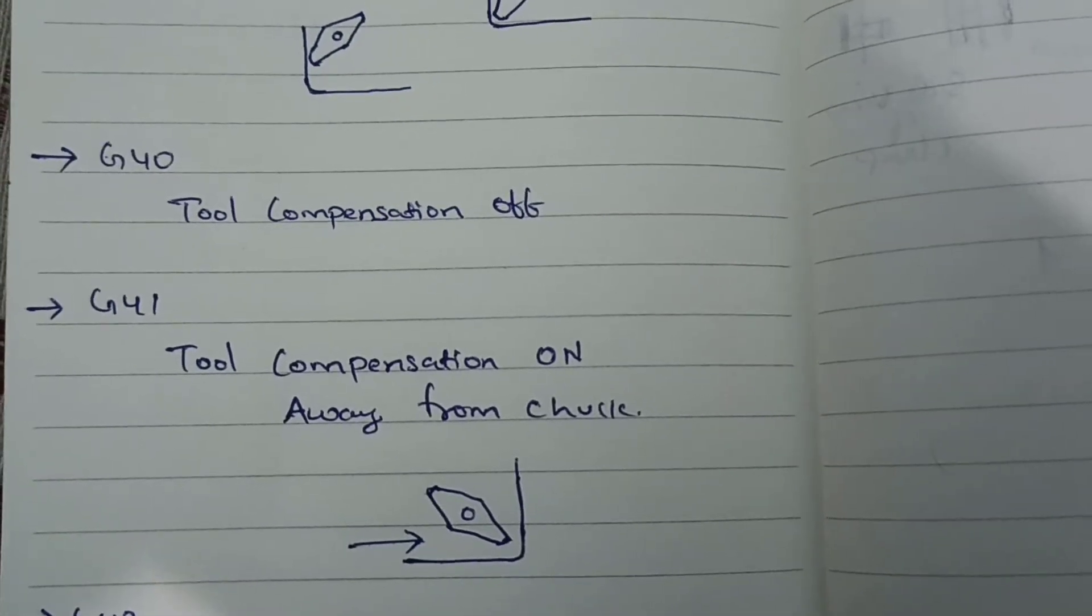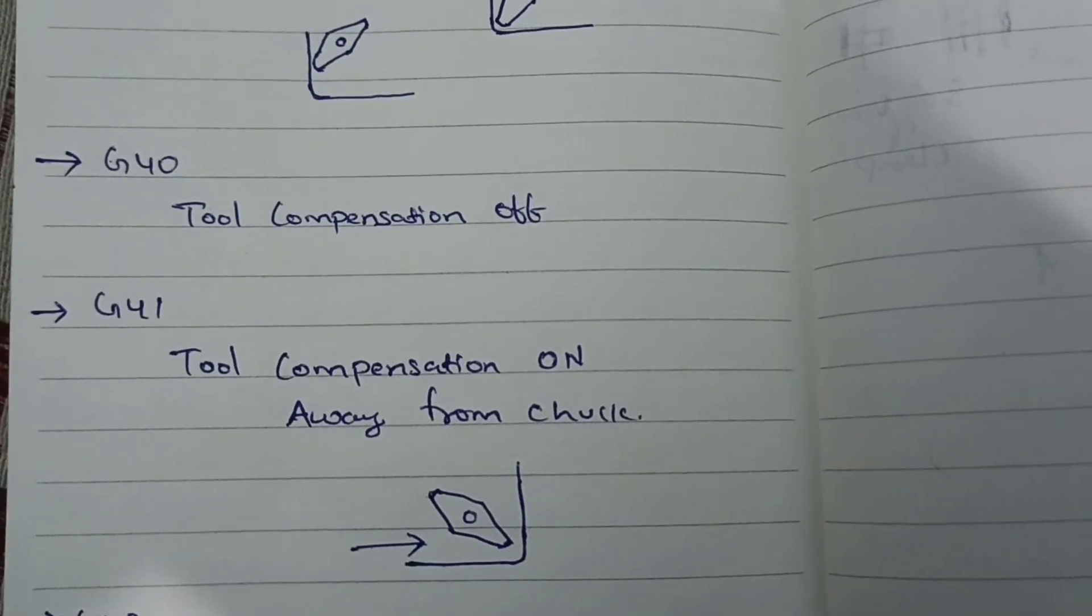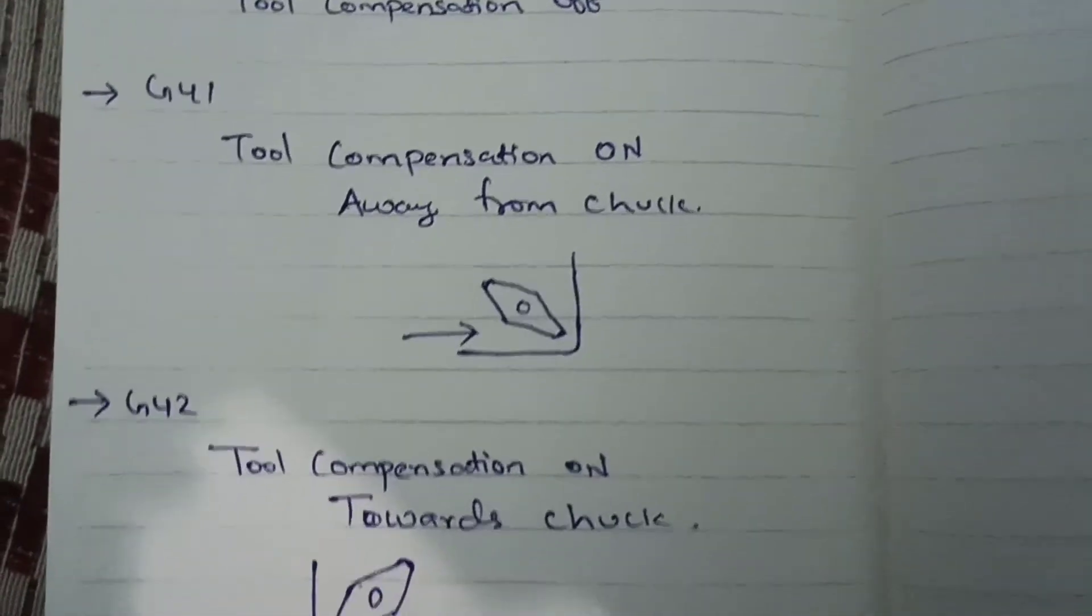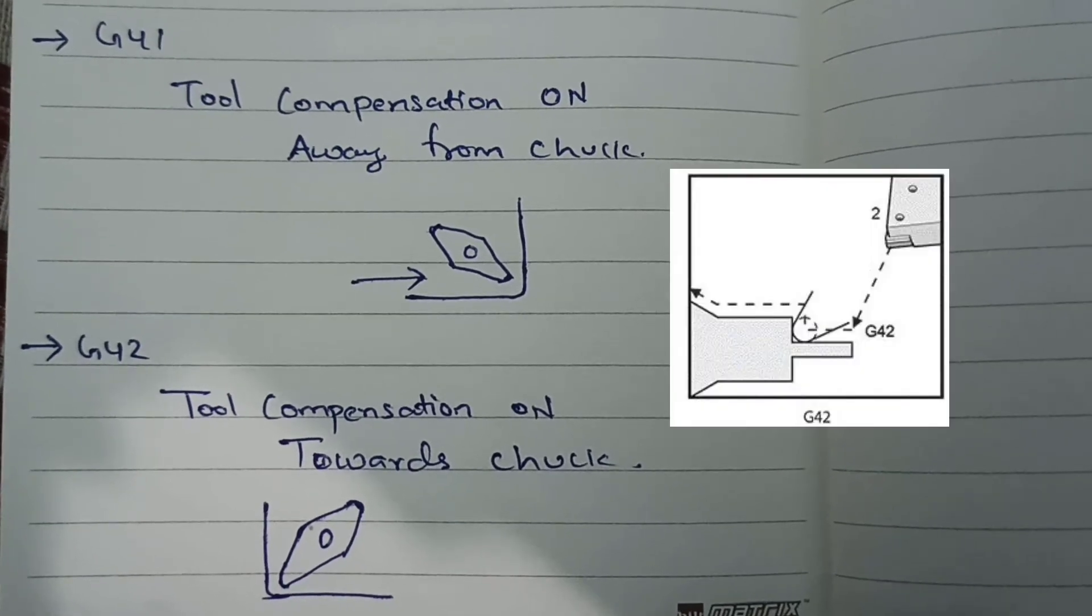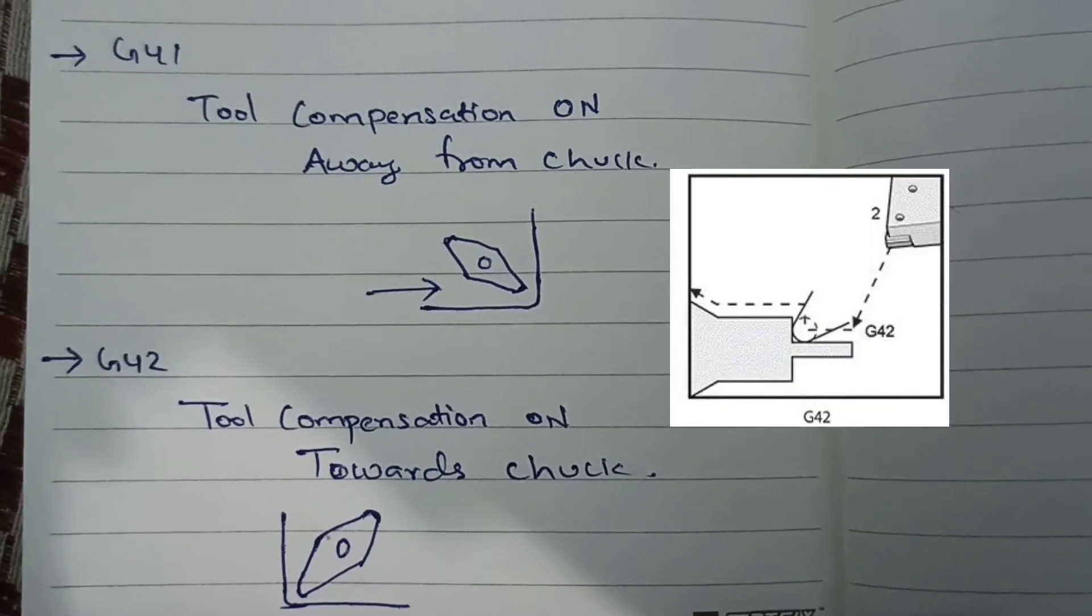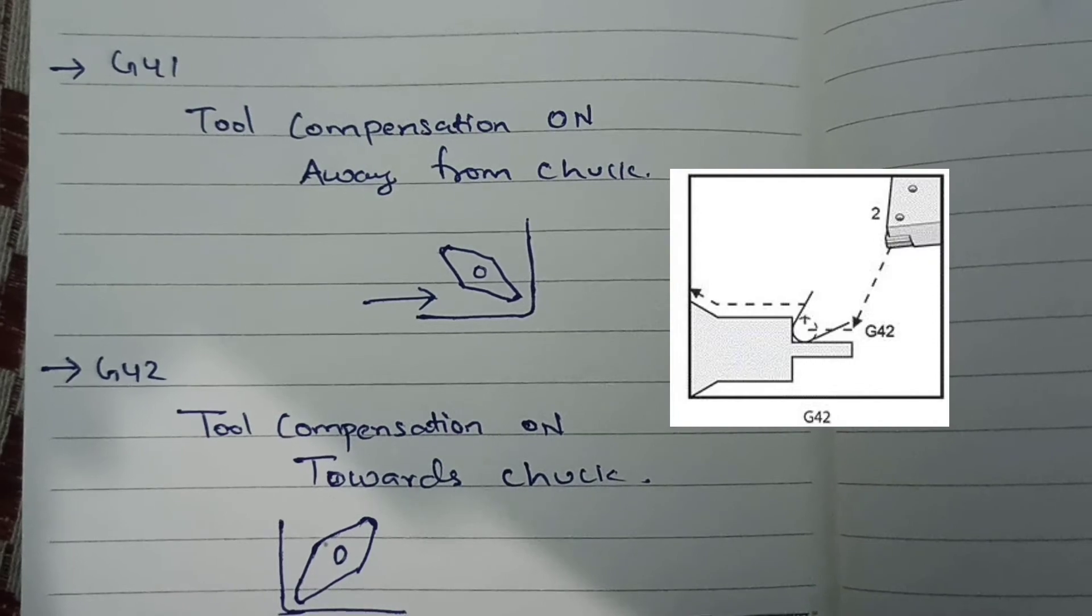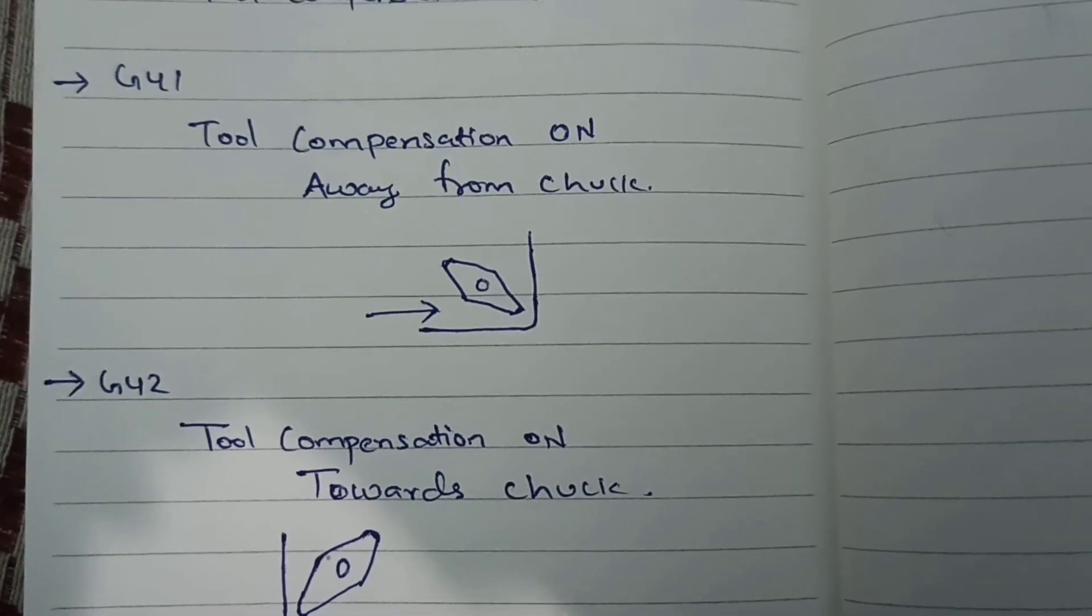What is G42 code? G42 is the replication of G41 like the cutting radius needs to be generated in which the tool moves towards the chuck in OD turning. This G42 code will be used. For ID, it is the reverse of G41.